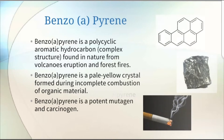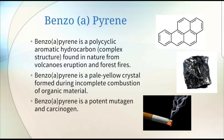What is Benzo-A-Pyrene? Benzo-A-Pyrene is a pale yellow crystal formed during incomplete combustion of organic materials. It is classified as a polycyclic aromatic hydrocarbon, usually occurring as a complex mixture, not as a single compound. This chemical can be found in nature from eruption of volcanoes and forest fires. Benzo-A-Pyrene is a known potent mutagen and carcinogen.